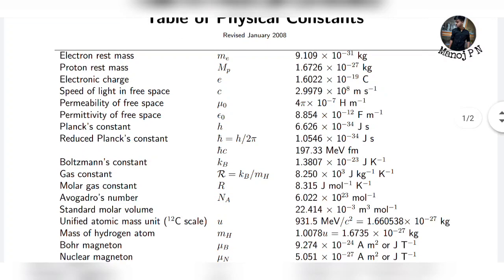We also have the permittivity of free space — the constant value is 8.854 × 10 to the power of minus 12 farads per metre.